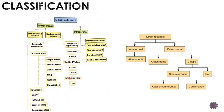Circumferential clasps are further divided into simple circulate, reverse circulate, multiple circulate, ring, fishhook, and combination clasp. Gingivally approaching clasps include bar clasp, T clasp, modified T clasp, Y clasp, I clasp, intra-bulge clasp, and I-bar. Intracoronal attachments are divided into internal, external, stud, bar, and special.